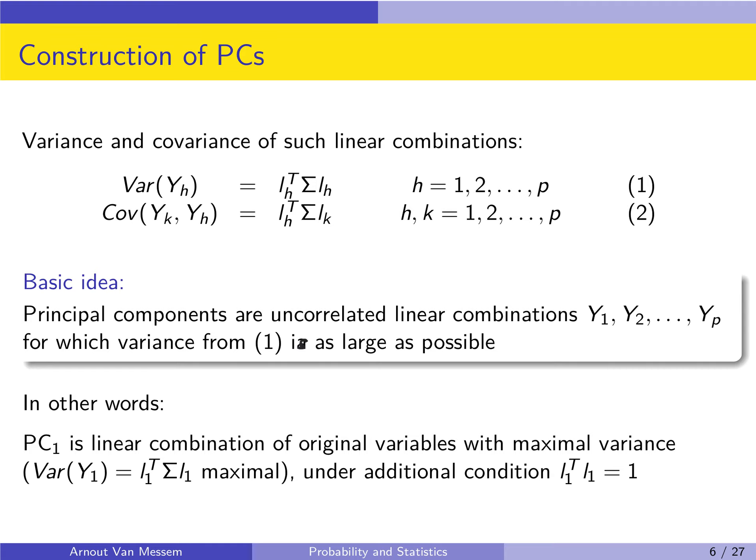The variance of yh is lh transposed times sigma times lh, and a similar calculation for the covariance between yk and yh shows that this equals lh transposed times sigma times lk. The basic idea in principal component analysis is that we will construct principal components which are uncorrelated — geometrically, the linear combinations will be orthogonal to one another, and statistically the covariance between any two principal components will be zero.